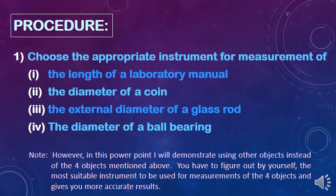The procedure: choose the appropriate instrument for the measurement of (1) the length of the laboratory manual, (2) the diameter of a coin, (3) the external diameter of a glass rock, and (4) the diameter of a ball bearing. However, in this demonstration I will use other objects instead of the 4 objects mentioned above. You have to figure out by yourself the most suitable instrument to be used for measurements of the 4 objects and to give more accurate results.